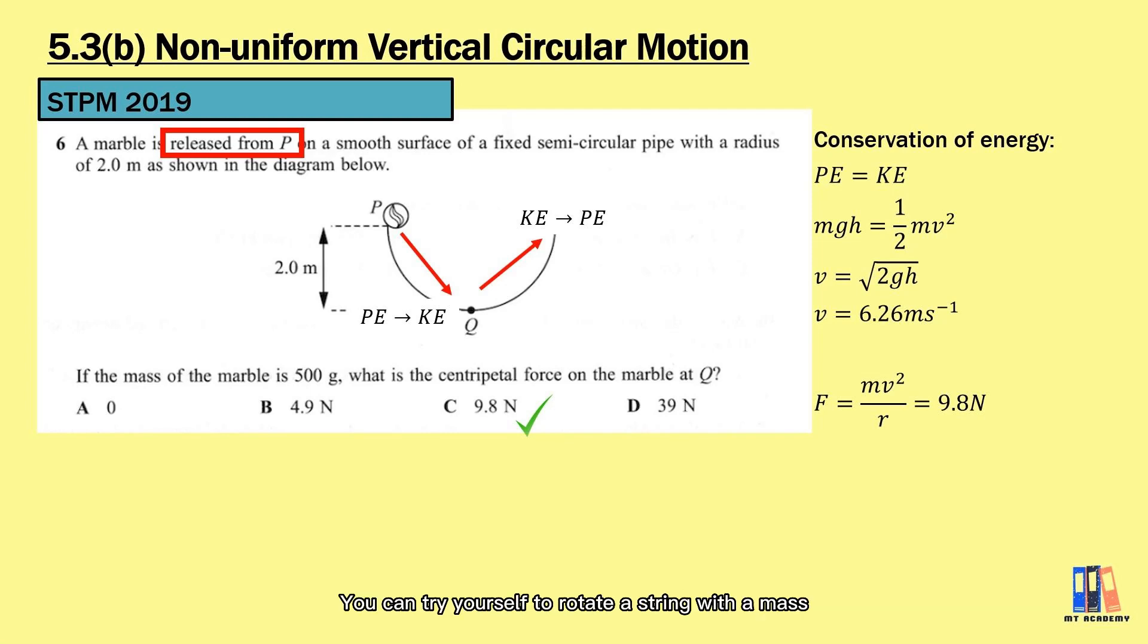So something extra for you to learn. You can try yourself to rotate a string with a mass. Try to maintain the speed of the object and you will feel that you need to apply different tension in the string in order to do so. Without your help, the speed of the object is changing based on its position. And if the speed is not fast enough, it didn't make a complete vertical circular motion.